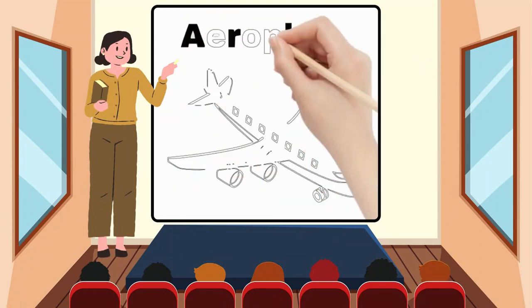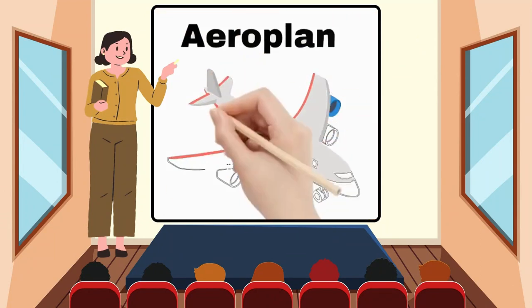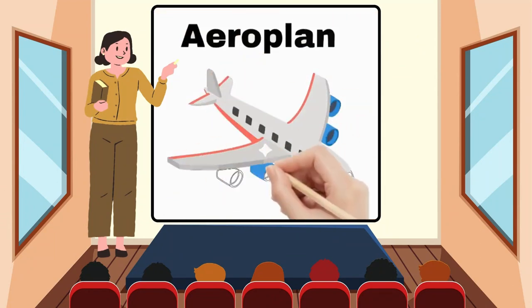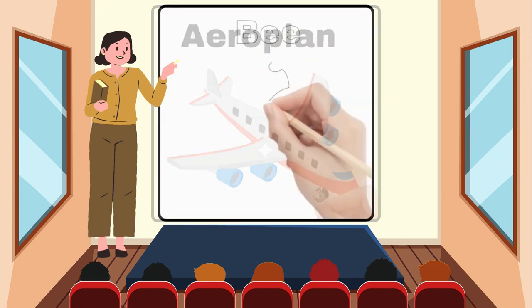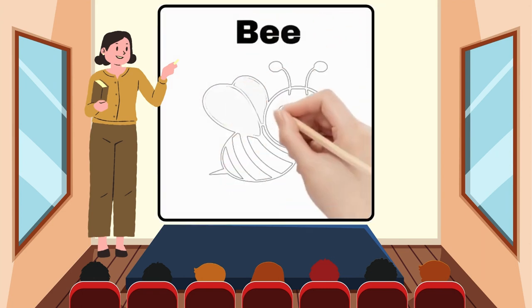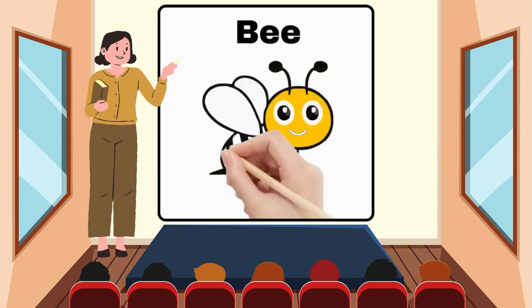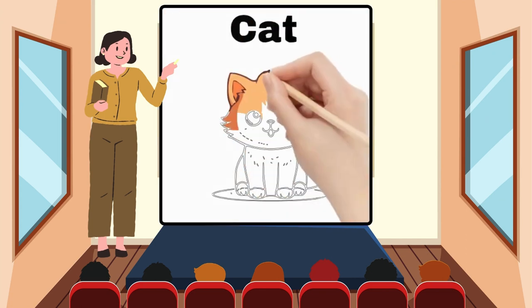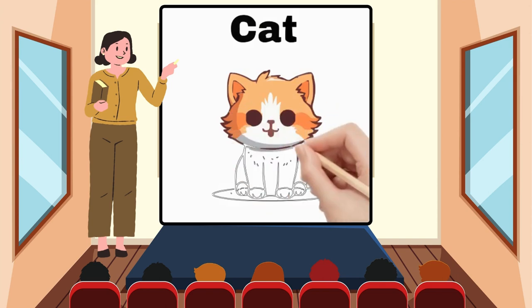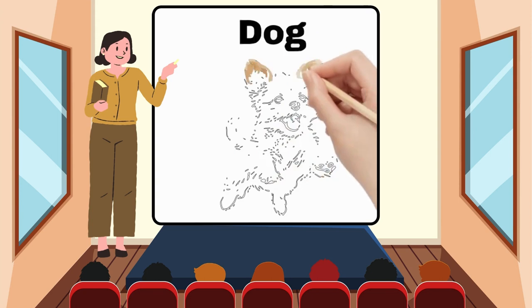A for Airplane. B for Bee. C for Cat. D for Dog.